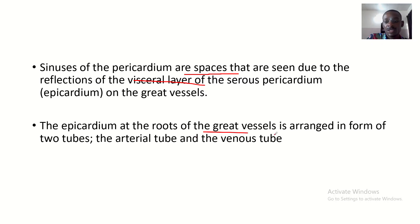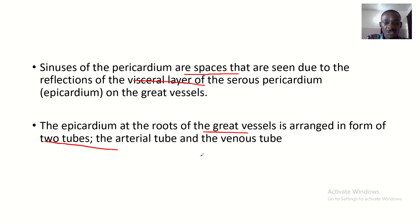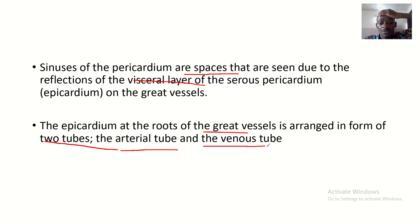The epicardium at the roots of the great vessels is arranged in the form of two tubes: the arterial tube and the venous tube.